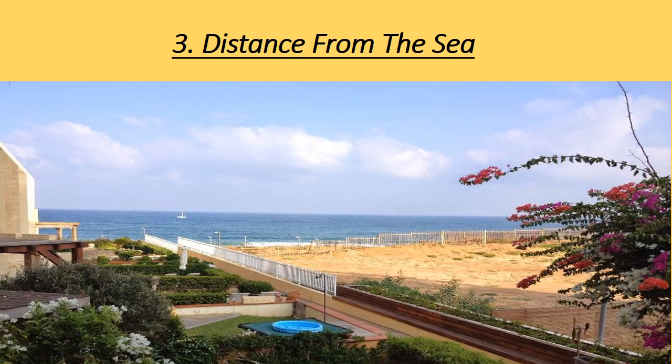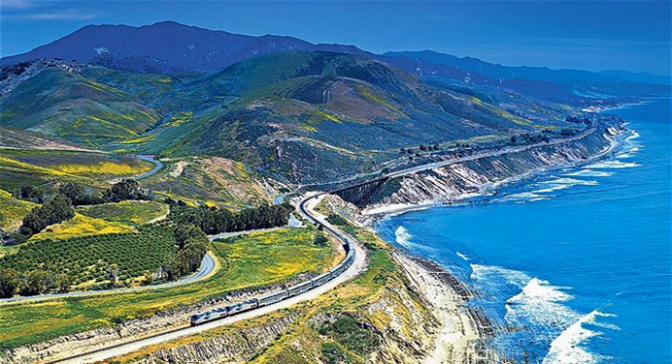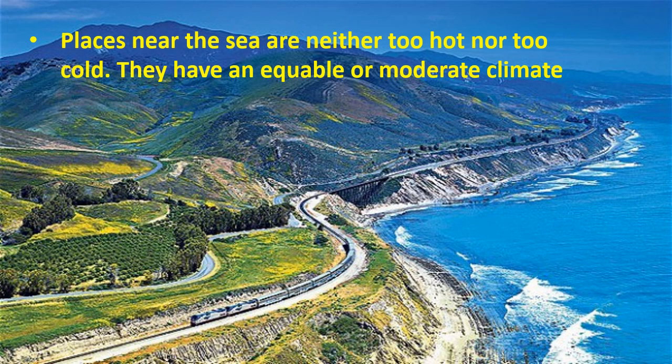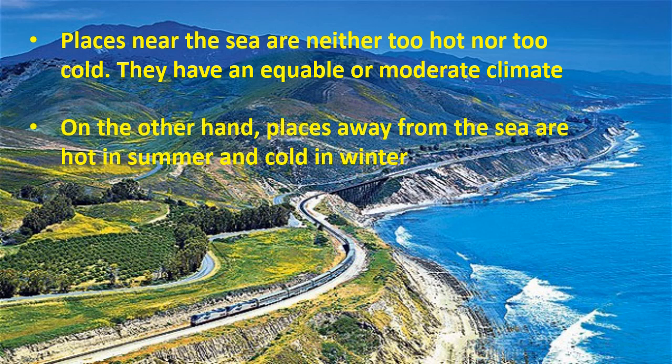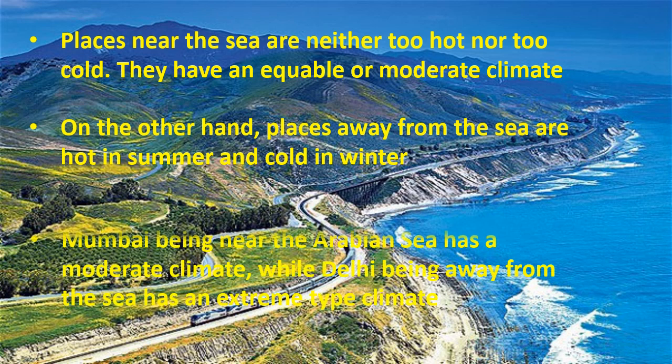Distance from the sea. Places near the sea are neither too hot nor too cold — they have an equable or moderate climate. On the other hand, places away from the sea are hot in summer and cold in winter. Mumbai, being near the Arabian Sea, has a moderate climate, while Delhi, being away from the sea, has an extreme type of climate.